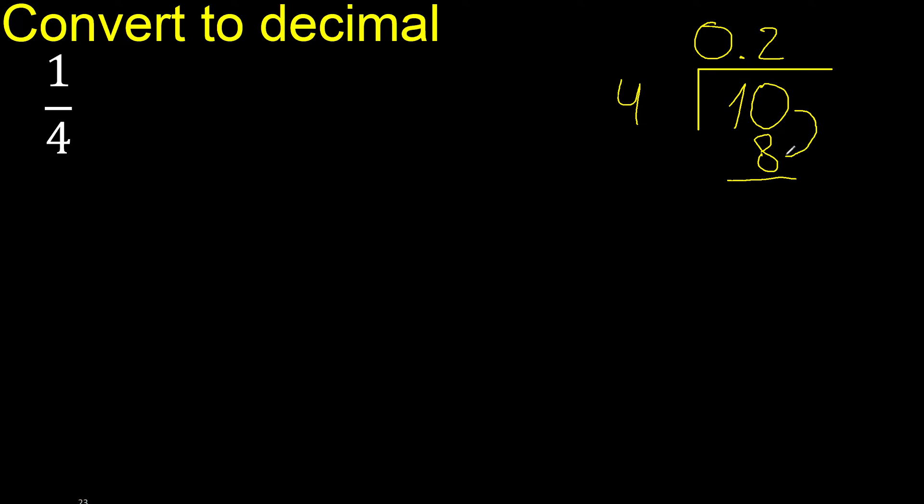10 minus 8 is 2. There is no number that goes down, therefore complete with 0. Point is here.